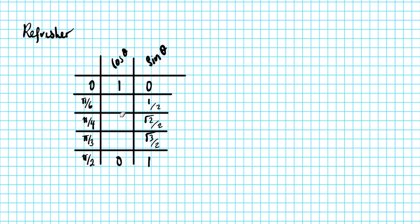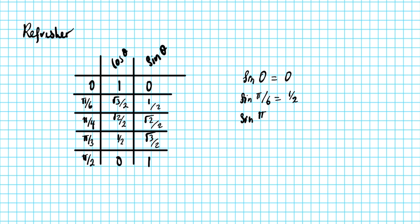Cosine goes in the reverse order. Starting from pi over 2, you have 0, then root 2 over 2, root 3 over 2. So the chart tells us: sine of 0 is 0; sine of pi over 6 (30 degrees) is 1/2; sine of pi over 4 (45 degrees) is root 2 over 2; and sine of pi over 3 (60 degrees) is root 3 over 2.